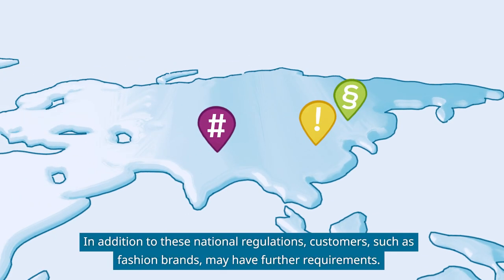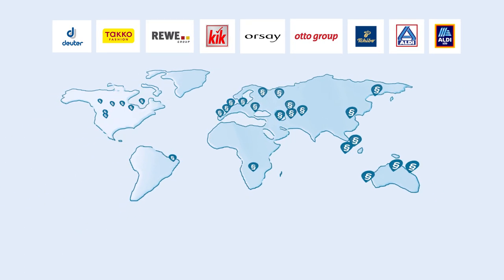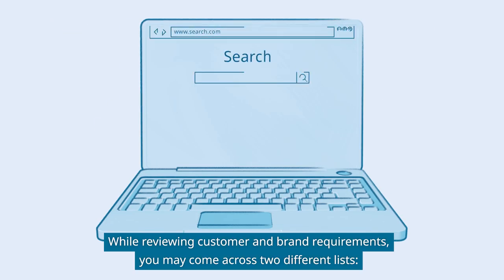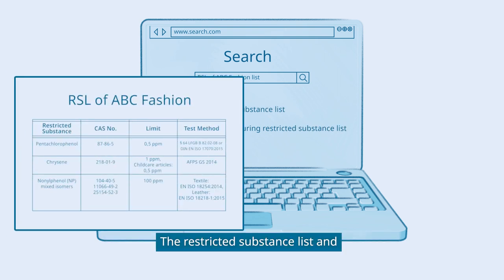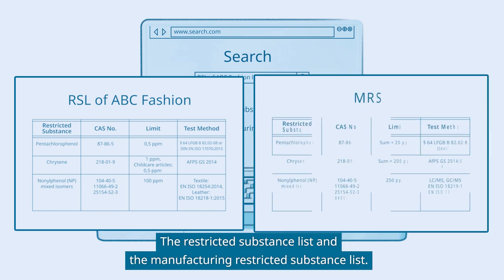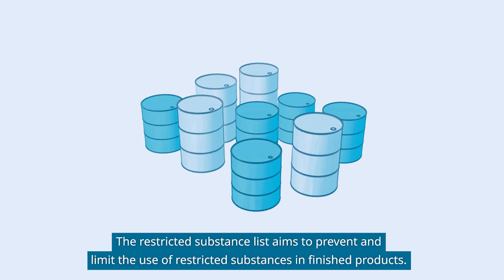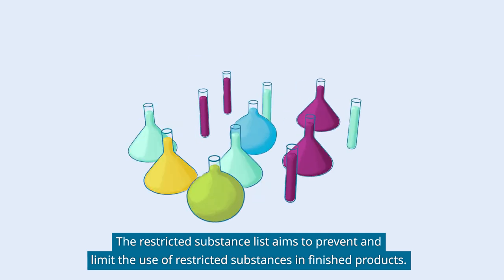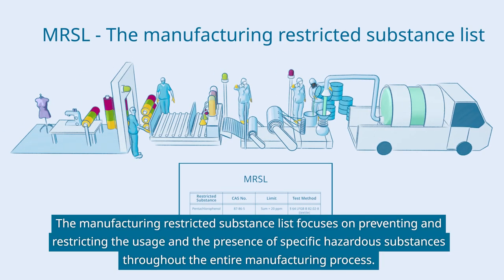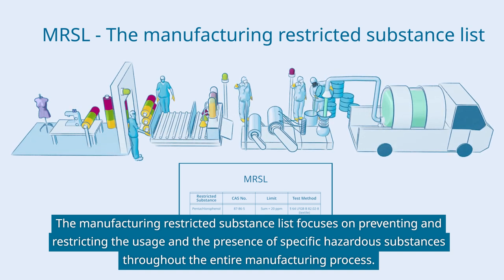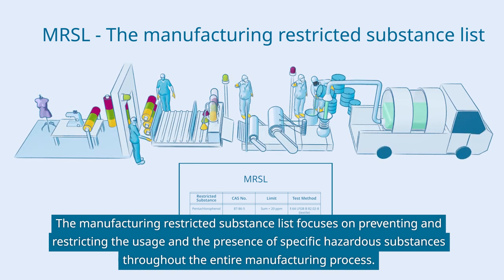In addition to these national regulations, customers such as fashion brands may have further requirements. While reviewing customer and brand requirements, you may come across two different lists: the Restricted Substance List and the Manufacturing Restricted Substance List. The Restricted Substance List aims to prevent and limit the use of restricted substances in finished products. The Manufacturing Restricted Substance List focuses on preventing and restricting the usage and presence of specific hazardous substances throughout the entire manufacturing process.